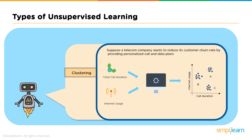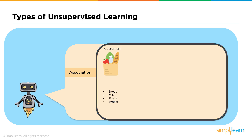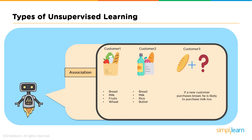Now let's understand association with another example. Customer 1 goes to a supermarket and buys bread, milk, fruits, and wheat. Customer 2 goes and buys bread, milk, rice, and butter. When customer 3 goes and buys bread, it is highly likely that they will also buy milk. Hence, a relationship is established based on customer behavior and recommendations are made.